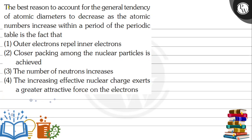Hello, let's see the question. It says the best reason to account for the general tendency of atomic diameter to decrease as atomic number increases within a period of the periodic table is the fact that - among which factor? The options are: outer electrons repel inner electrons, closer packing among the nuclear particles is achieved, the number of neutrons increases, the increasing effective nuclear charge exerts a greater attractive force on electrons.